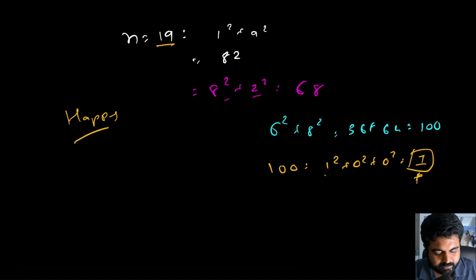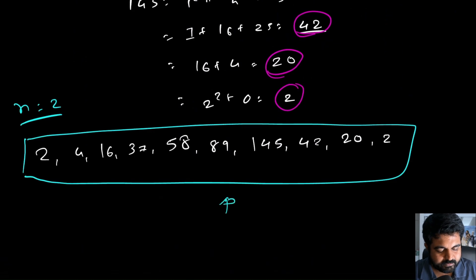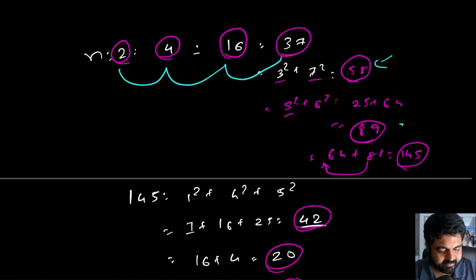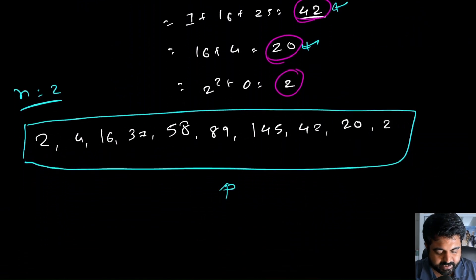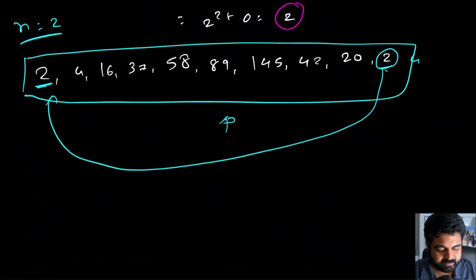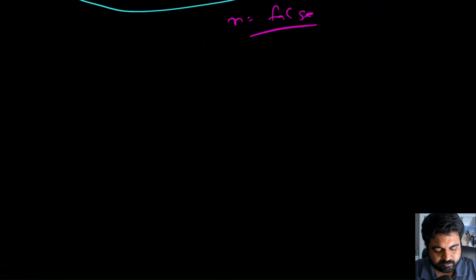Let's take one more example — suppose the given n is equal to 2. You can see the full sequence and math here. Notice that we start at 2 and at some point we end up at 2 again. If we keep going forward, the next value would be 4, and so on — we would be in an infinite loop. So in this case, the given number n is not a happy number and we return false.